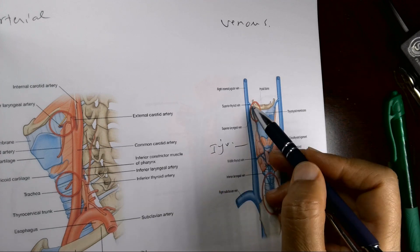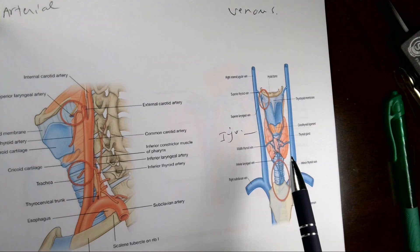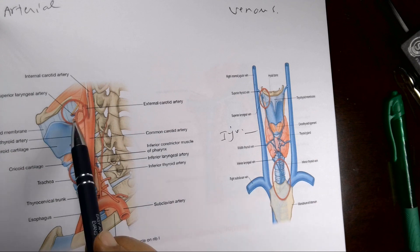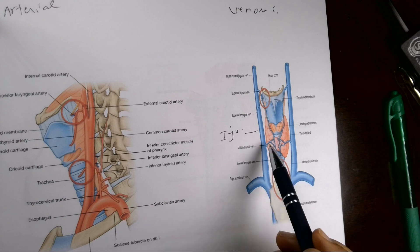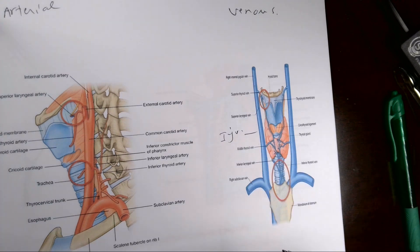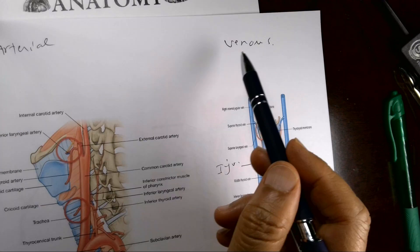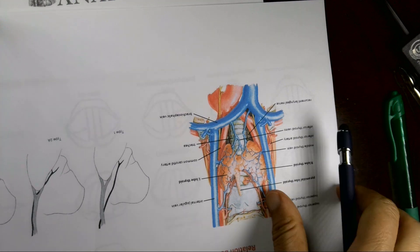The blood supply is straightforward. The superior thyroid artery gives the superior laryngeal artery, which enters the larynx with the internal laryngeal nerve through the thyrohyoid membrane, supplying the upper larynx. The inferior thyroid artery gives the inferior laryngeal artery, supplying the lower larynx. Venous drainage follows the same pattern via superior and inferior thyroid veins to the internal jugular vein.